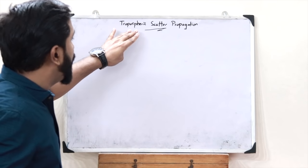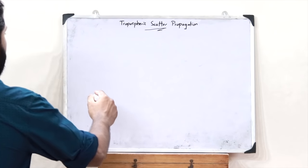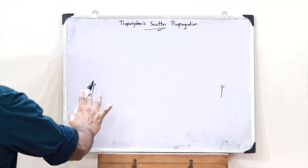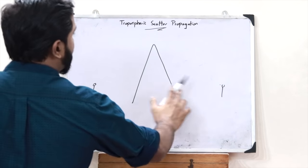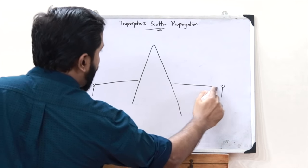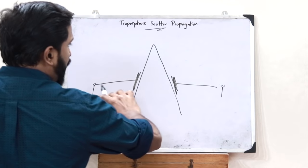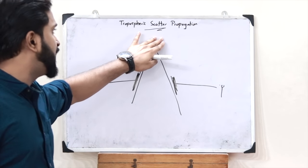Welcome back. Today we will be discussing tropospheric scatter propagation. This is a type of communication used when line-of-sight communication is not possible. Imagine a transmitter and a receiver with a huge hill in between — this obstacle acts as a barrier, making line-of-sight communication impossible. In such cases, we use what is referred to as tropospheric scatter propagation.